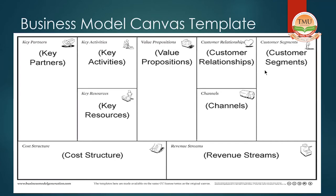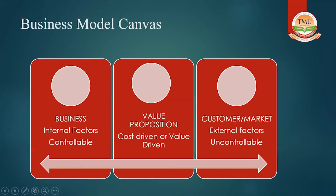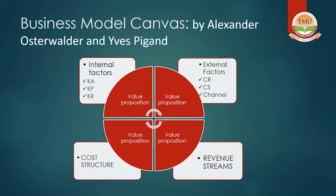So the whole template divides into three blocks: the left side as infrastructure building blocks, the right side as customer building blocks, and the bottom as finance-based building blocks. This is also depicted as the value proposition being cost driven or value driven. On the left, internal factors are controllable; on the right, customers and market are external and uncontrollable — everything revolves around the value proposition.